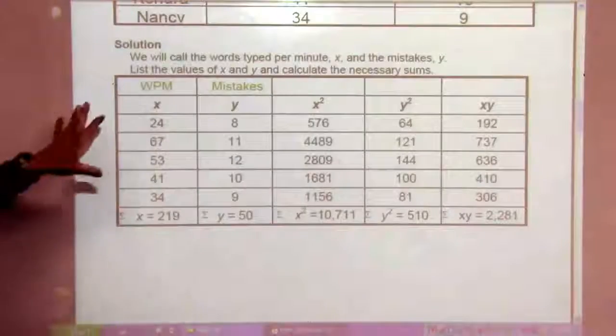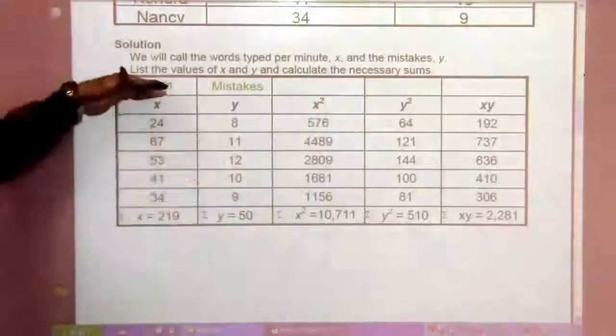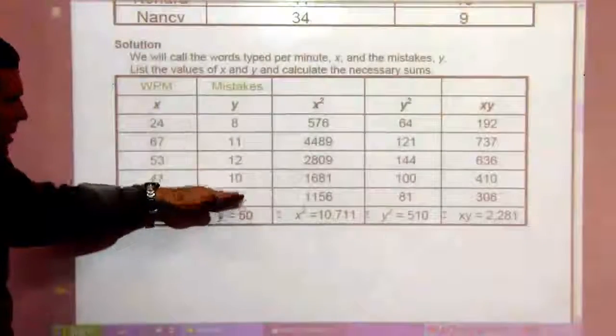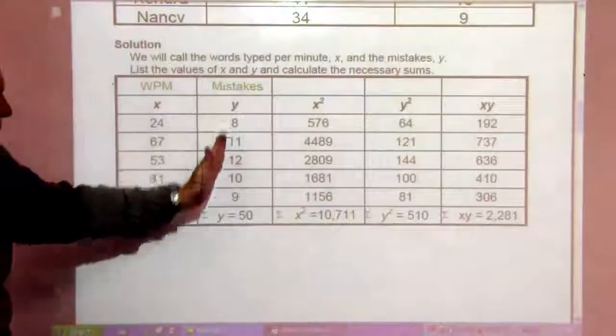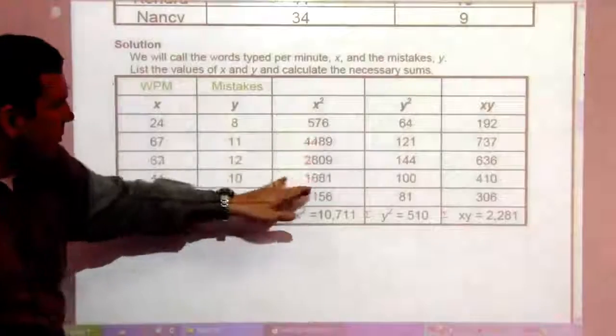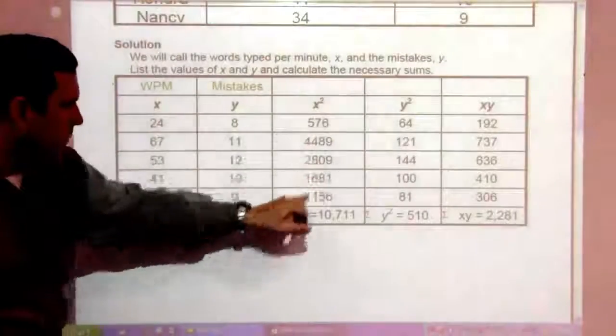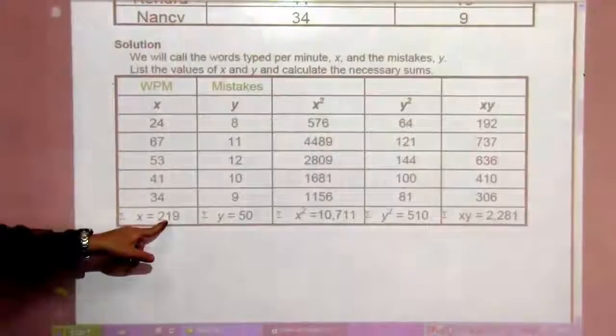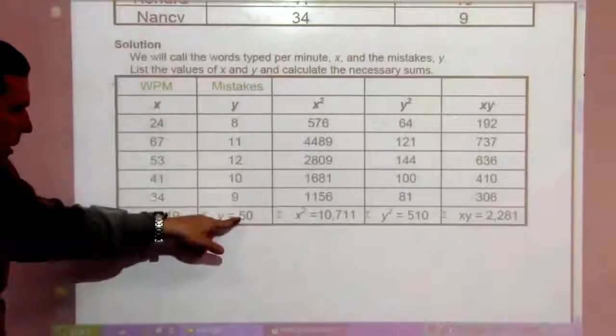So, if we look at this table of the words per minute, the mistakes, words being X, mistakes being Y, the X squared column would be just squaring these values. This is the sum of all the X's. This is the sum of all the Y's.